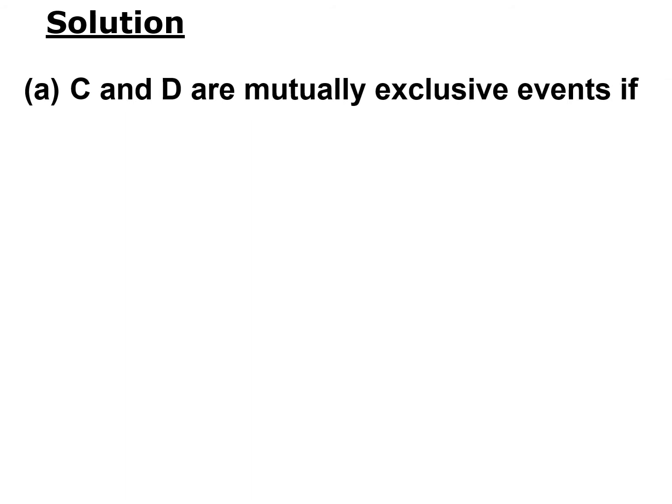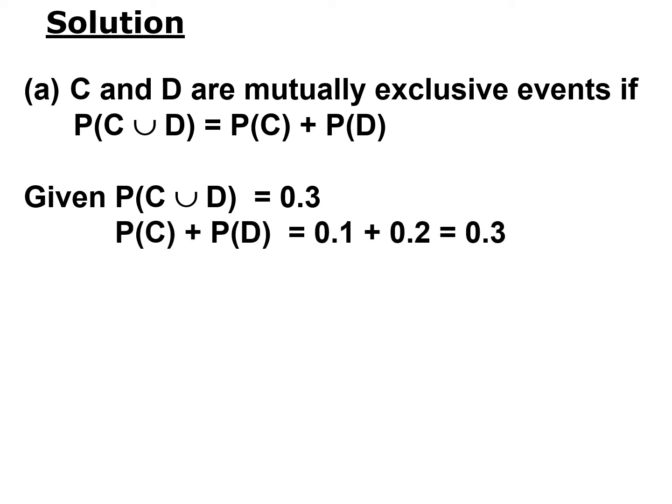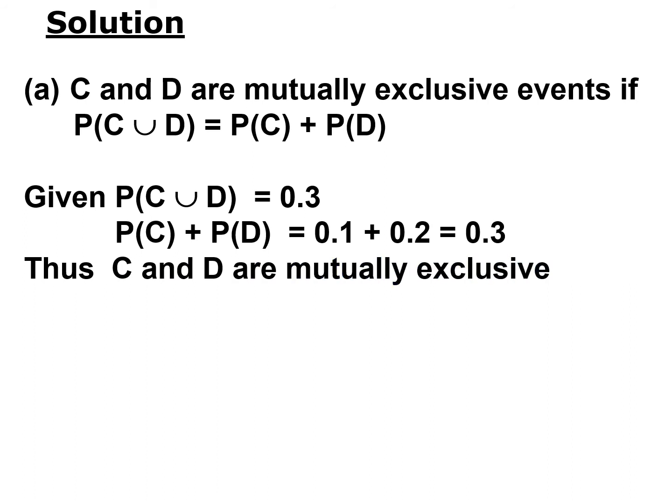The solution for Part A: C and D are mutually exclusive events if P(C ∪ D) equals P(C) + P(D), when the intersection between C and D is 0. Given that P(C ∪ D) is 0.3, we check: P(C) + P(D) = 0.1 + 0.2 = 0.3. Since these two are equal, we can say that C and D are mutually exclusive.